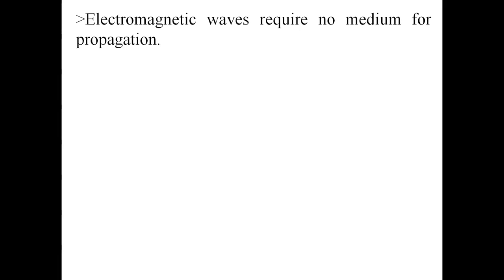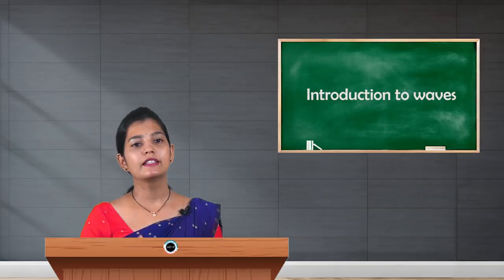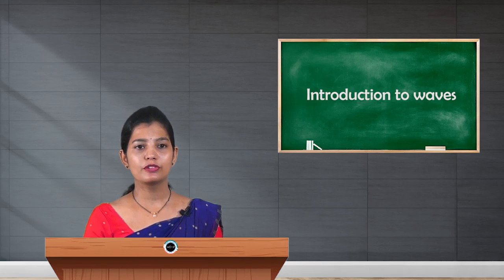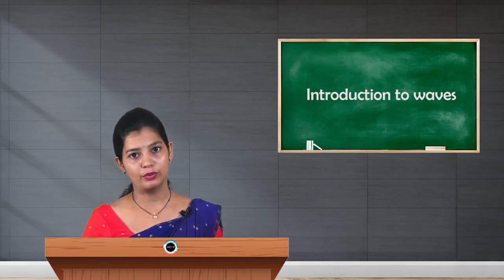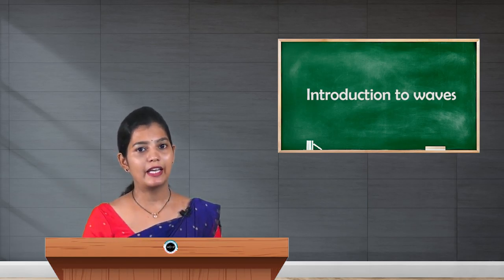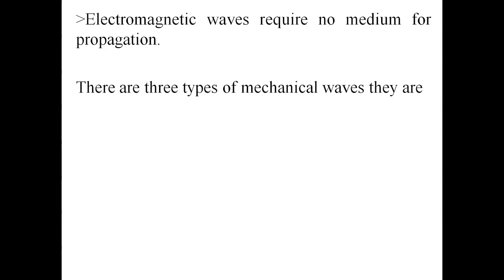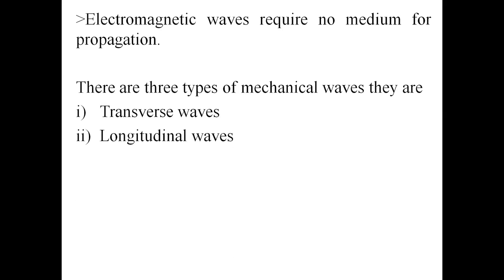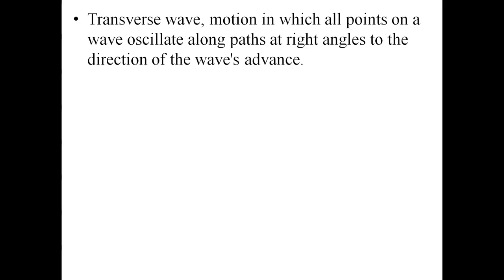Electromagnetic waves do not require any medium for propagation — they can even propagate through vacuum. One of the best examples is light waves. There are three types of mechanical waves: transverse waves, longitudinal waves, and surface waves. In our discussion, we will focus on transverse and longitudinal waves.